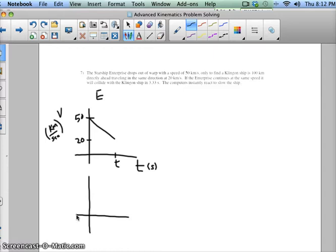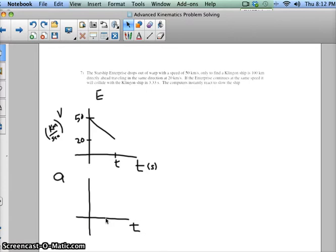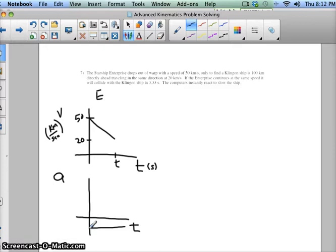Once you have your velocity time graph, you probably would want to make an acceleration time graph. I don't think it's really helpful in this problem, but I might as well. We have no idea what the acceleration is. We only know what the graph should look like if you're along the line. We don't have any information about acceleration, so it's not going to help.